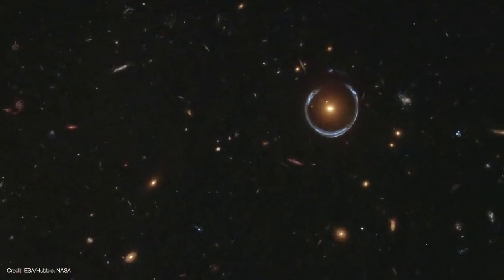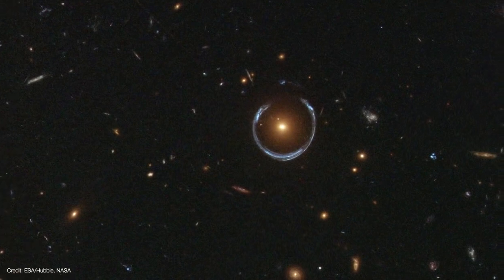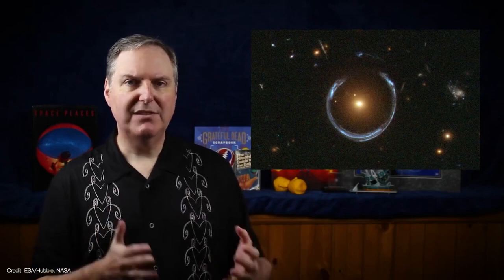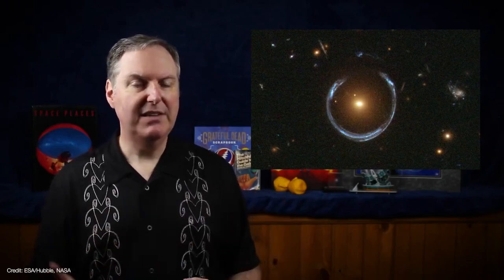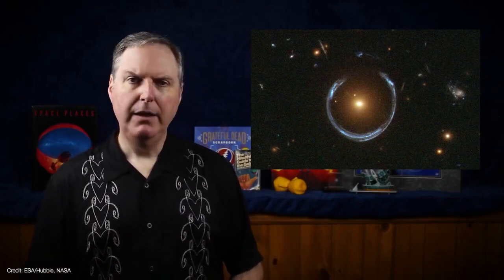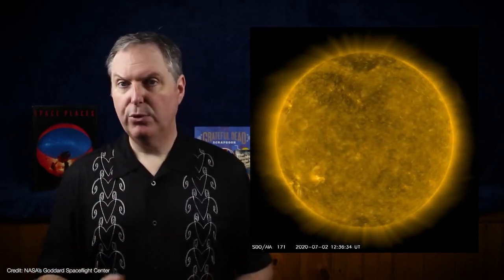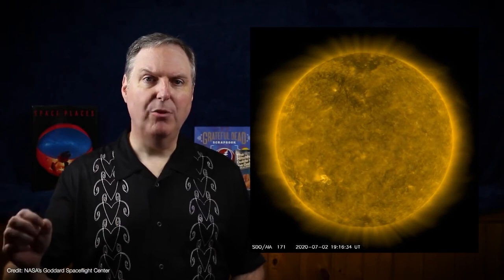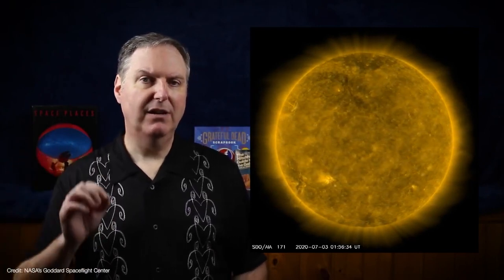We use Einstein rings to probe distant galaxies that are being lensed by foreground galaxies. However, Einstein rings are rare because seeing them requires a chance alignment between the source, the lensing object, and Earth. But if we use the sun as a gravitational lens, we could, in principle, position a telescope at the focus for any target of our choosing.